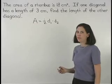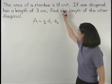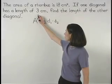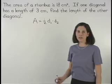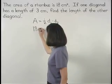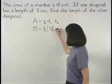We're given that the area of the rhombus is 18 square centimeters and one of the diagonals has a length of 3 centimeters. So we can set up the equation 18 equals 1 half times 3 times d2.